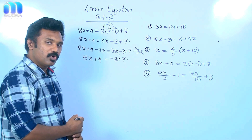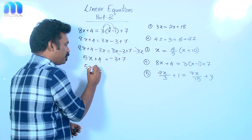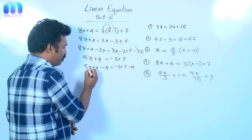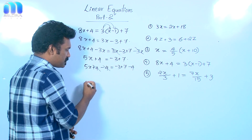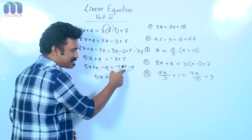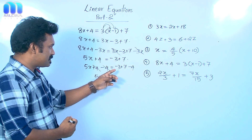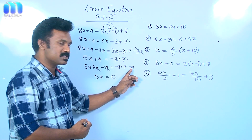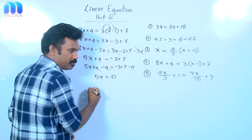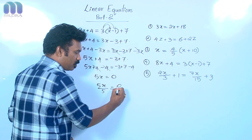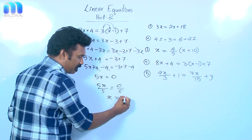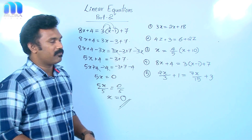Now 5x plus 4 equal to minus 3 plus 7. Again, I am going to subtract 4 from both sides: 5x plus 4 minus 4 equal to minus 3 plus 7 minus 4. 5x plus 4 minus 4 becomes 0, so 5x equal to minus 3 plus 7 minus 4, which is 0. So 5x equal to 0. Dividing by 5: 5x divided by 5 equal to 0 divided by 5 — x equal to 0 is the solution of this linear equation.